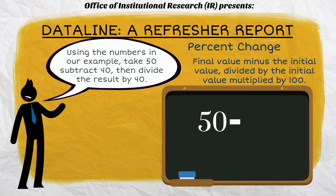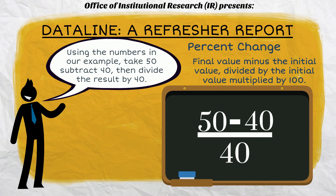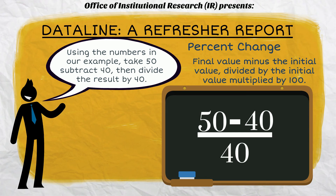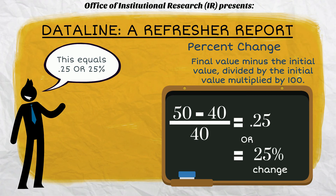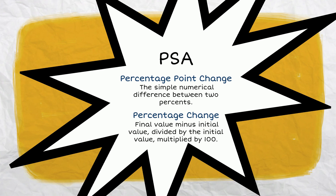Using the numbers in our example, take 50, subtract 40, and divide the result by 40. This equals 0.25 or 25%. Public service announcement: Percentage point change — the simple numerical difference between two percentages. Percentage change — final value minus initial value, divided by the initial value, multiplied by 100.